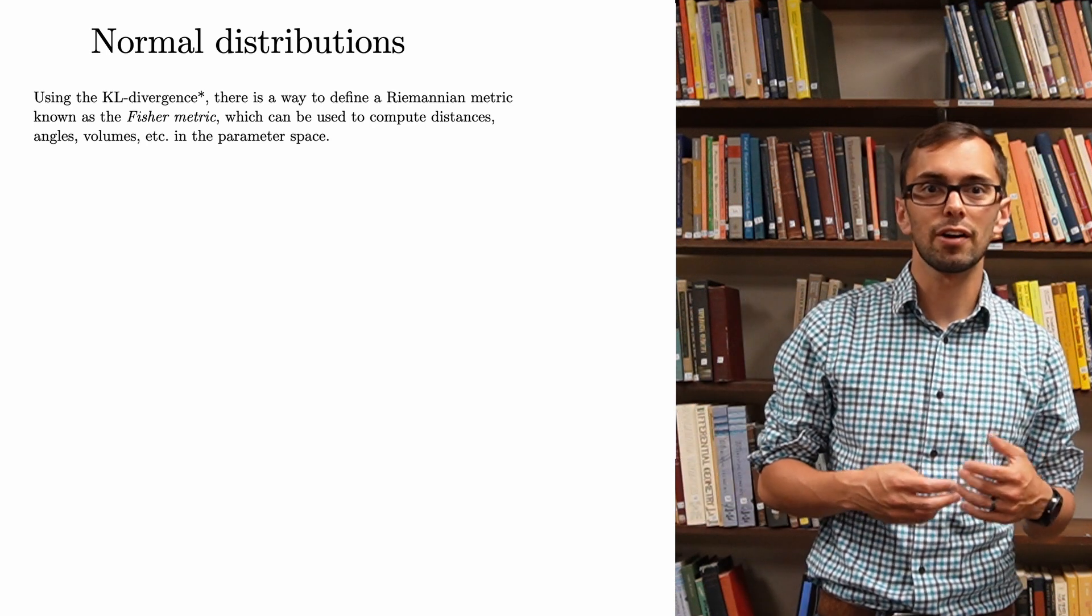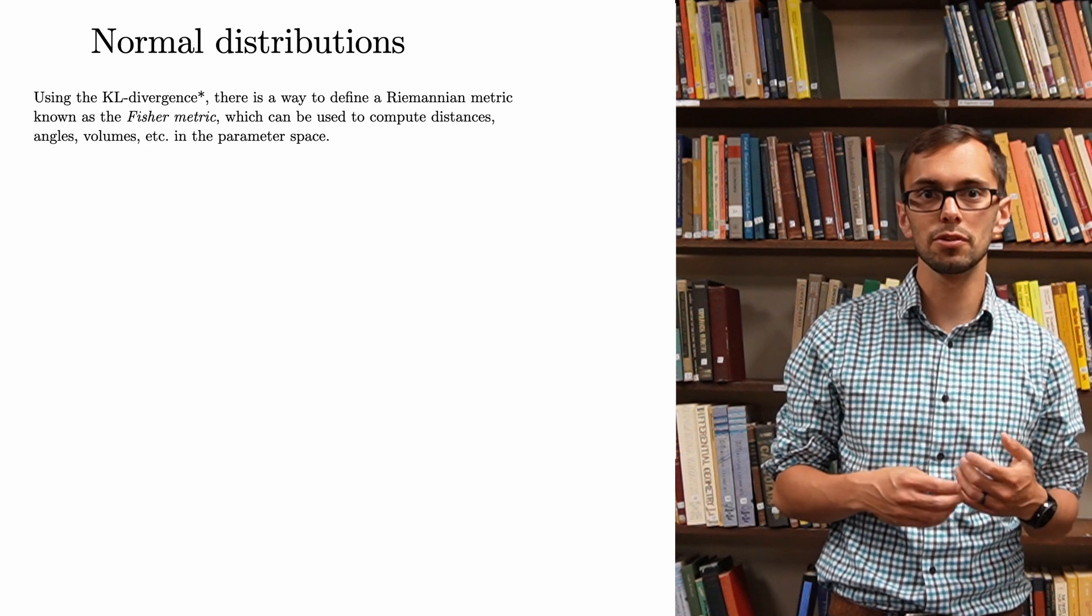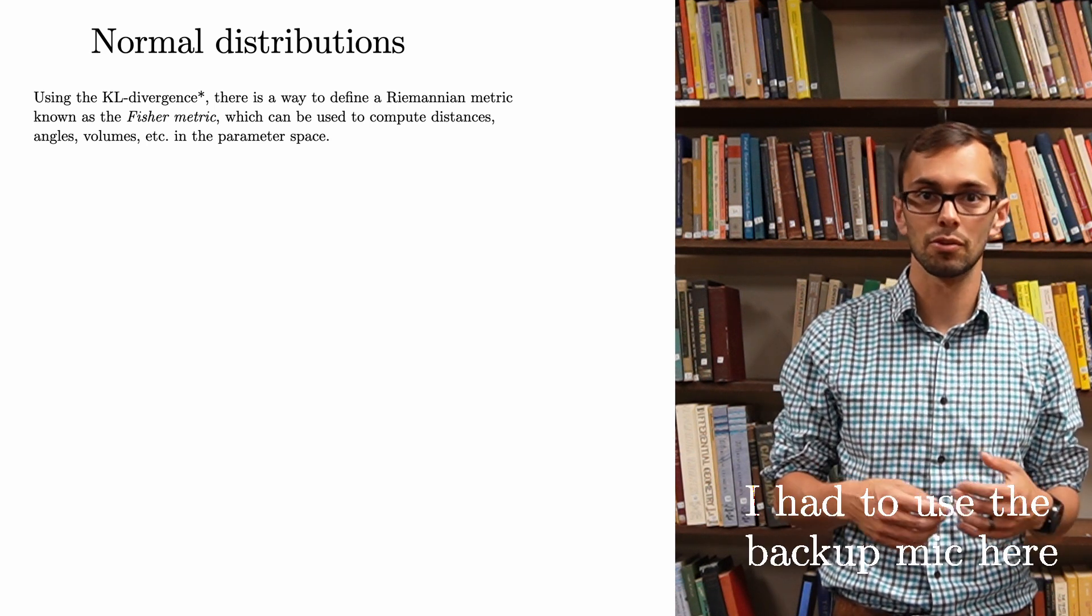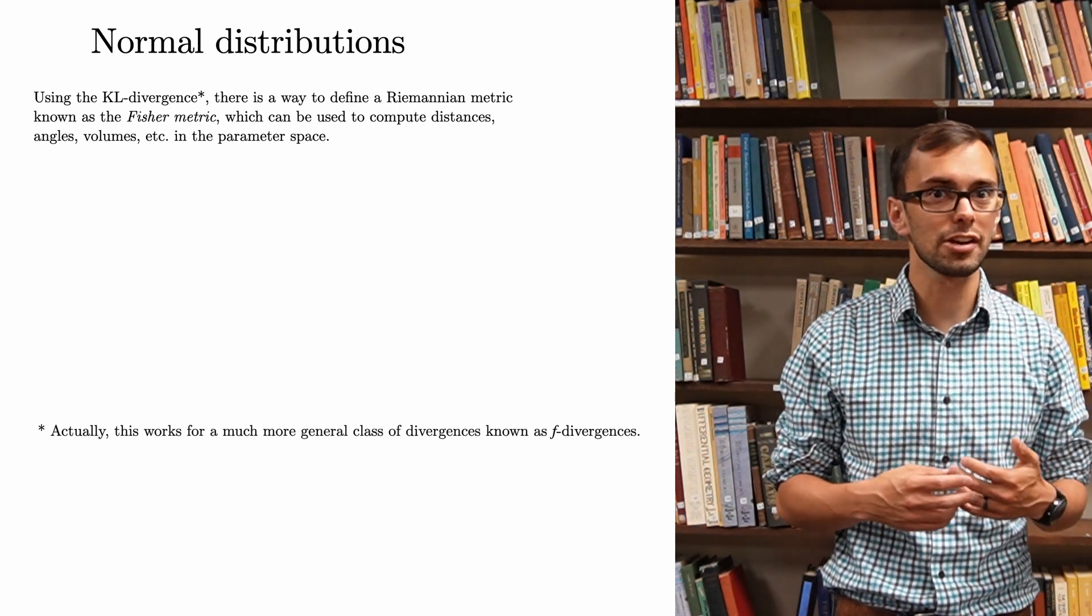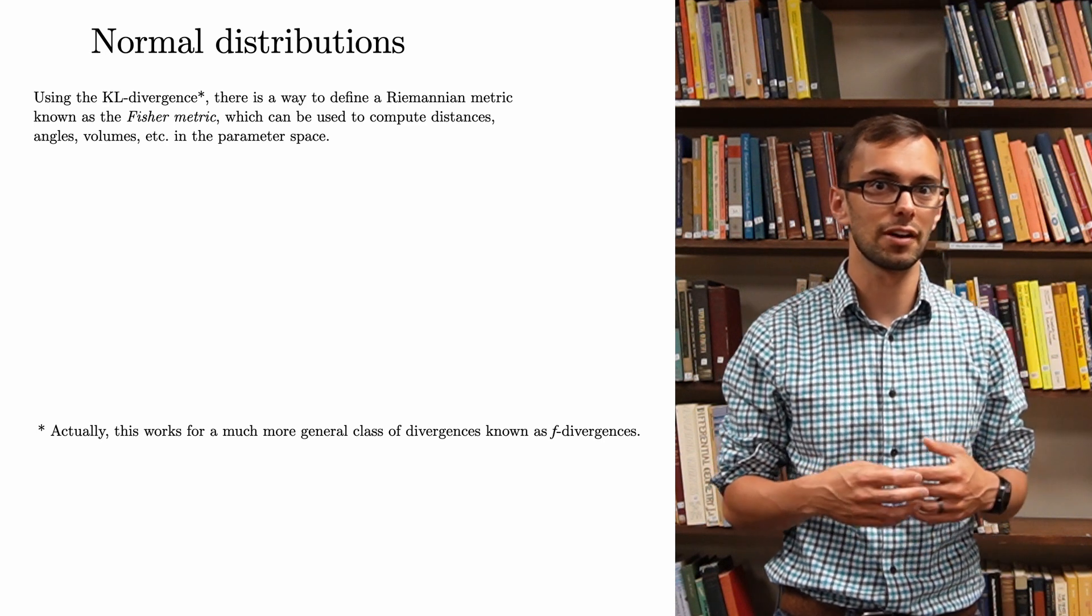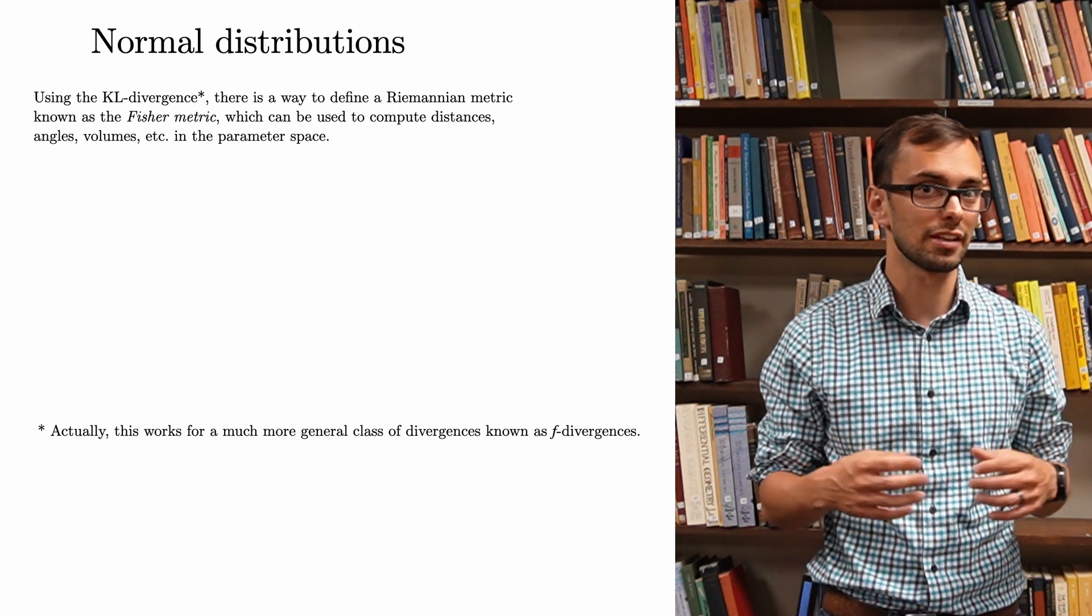Using the KL divergence, there is a way to define a Riemannian metric, known as the Fisher metric, which can be used to compute distances, angles, volumes, etc., within the statistical manifold. Actually, this construction works for a much more general class of divergences, which are known as F divergences. However, for concreteness, let's just focus on the KL divergence.